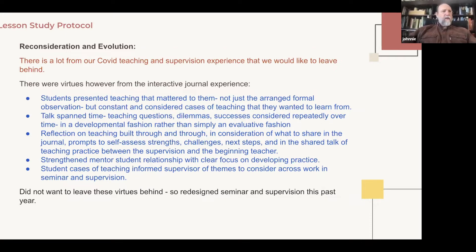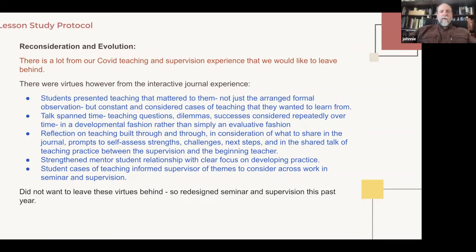I've been thinking a lot the last couple years about this push towards self-assessment and agency. With the supervision journal, it allowed the student teacher to say what mattered to them. Another piece: as much as we want our student teachers to offer choice to the students they're teaching, what kinds of choice do we offer our student teachers? In this case, they get to choose the case of teaching that matters to them. I felt it strengthened our relationship with a clear focus on developing practice — very much formative growth rather than evaluation — which was so important during a time when we were so distanced from each other in real space.